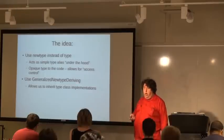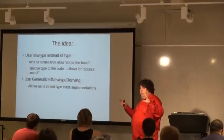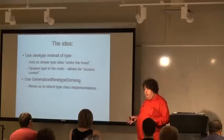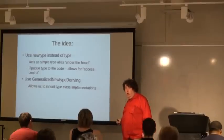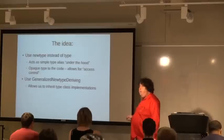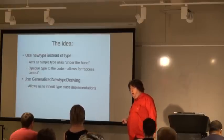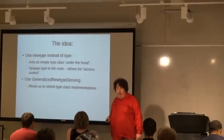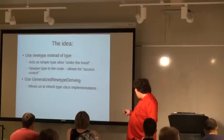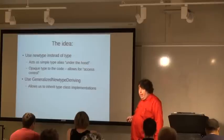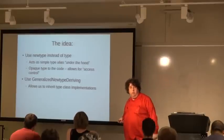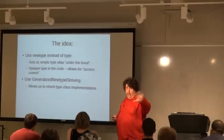This allows us to control access. I can define my WithError type, but outside of the module where I define it, you can't tell it's a Monad transformer stack — so you can only do the things I say you can do. Generalized NewType Deriving allows us to inherit the type class implementations when we do this. The old type has all these useful type classes — Monad, MonadTrans, Applicative, Functor, and more — and we'd like those in our new type without rewriting all definitions every time.